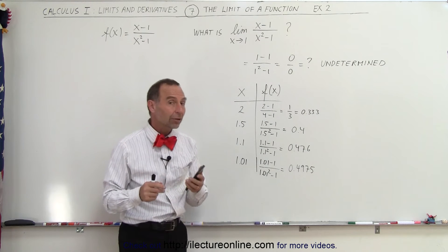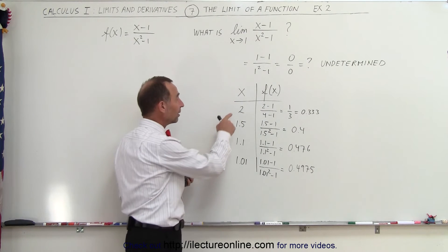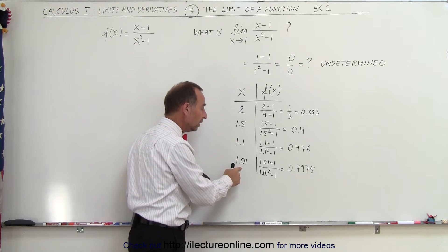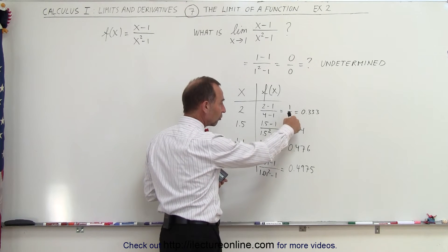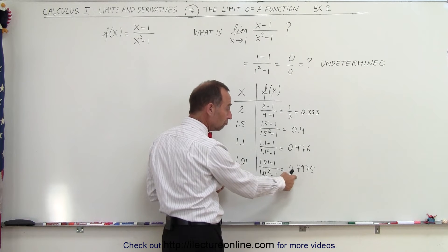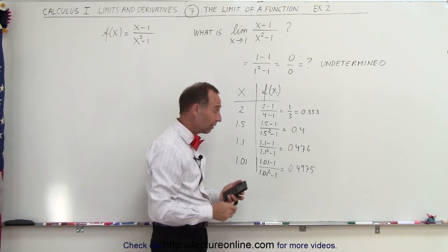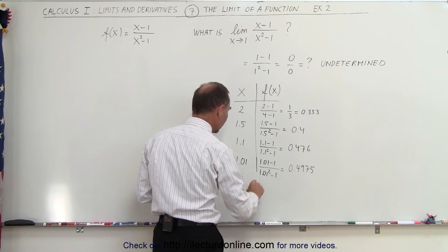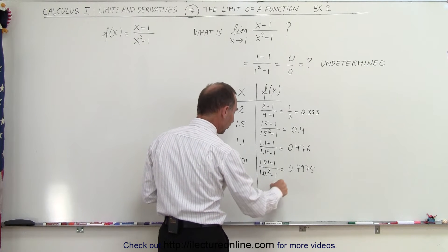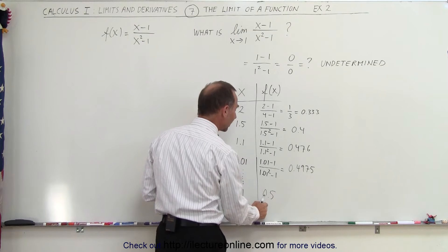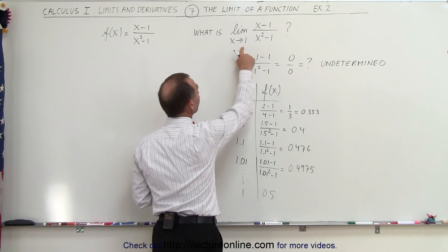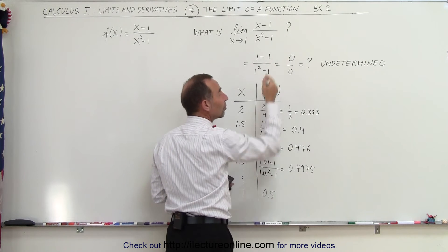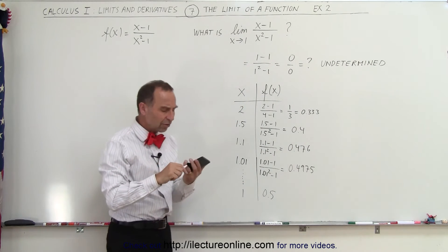Now more and more, this is beginning to look like to me that as the value of x gets closer and closer and closer to value 1, the function gets closer and closer and closer to, looks like 0.5, which means that ultimately when I get the number x to be equal to 1, I would suspect that the function will be equal to 0.5, which would mean that the limit as x approaches 1 of this function should equal 0.5, not 0 divided by 0. So that's kind of interesting.